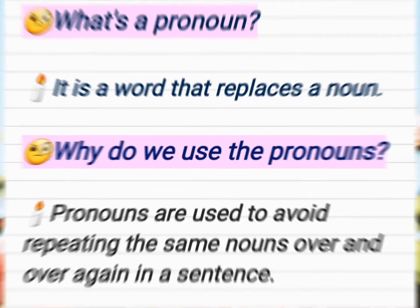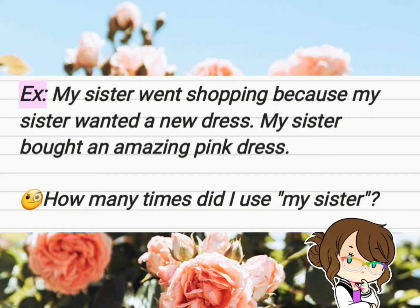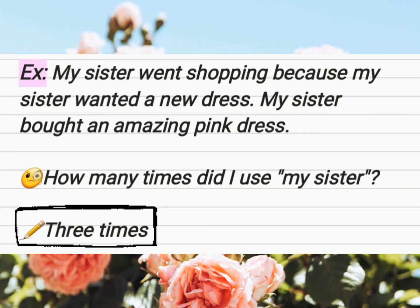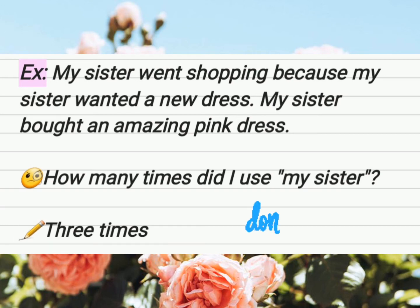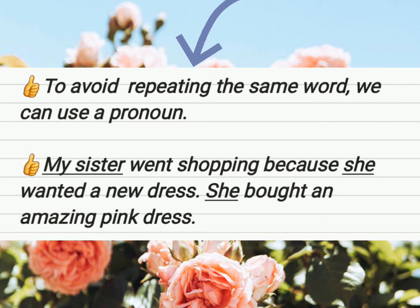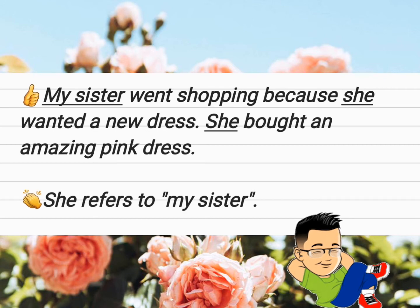For example: 'My sister went shopping because my sister wanted a new dress. My sister bought an amazing pink dress.' I used 'my sister' three times. Good writers don't repeat words over and over, so to avoid repetition we use a pronoun: 'My sister went shopping because she wanted a new dress. She bought an amazing pink dress.' The pronoun 'she' refers to 'my sister.'